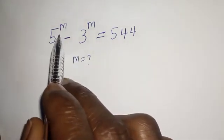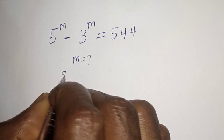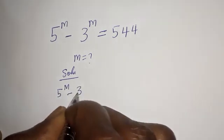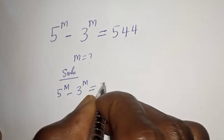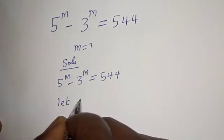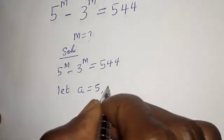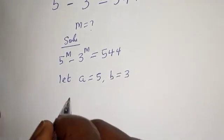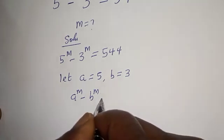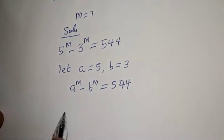Hello. How to solve for m from this nice math olympiad problem: 5 raised to power m minus 3 raised to power m is equal to 544. Solution: Let a equal 5 and b equal 3, therefore a raised to power m minus b raised to power m will be equal to 544.